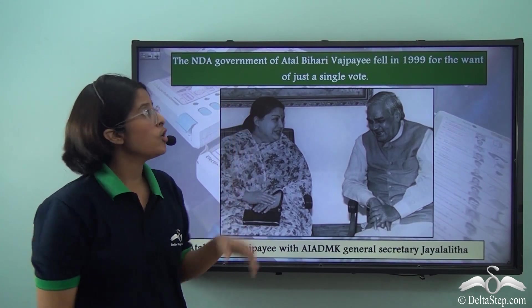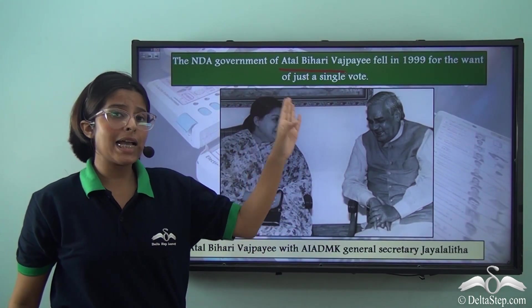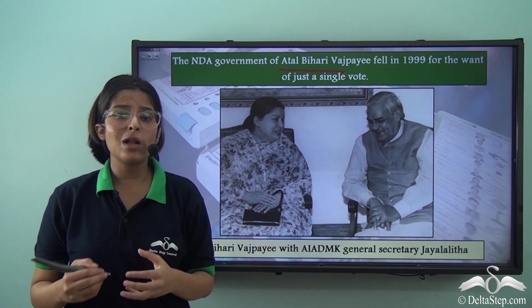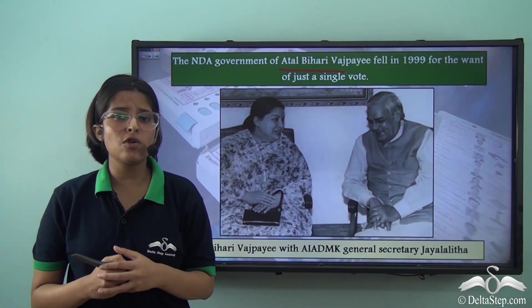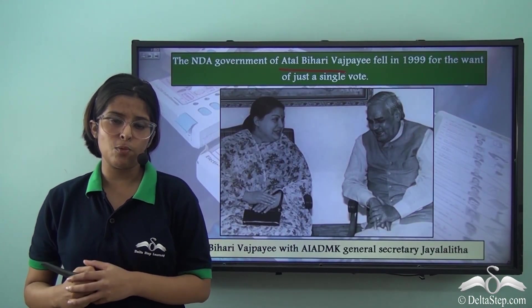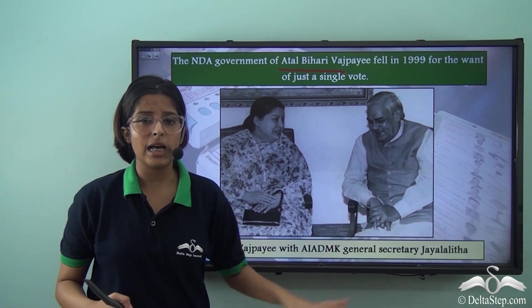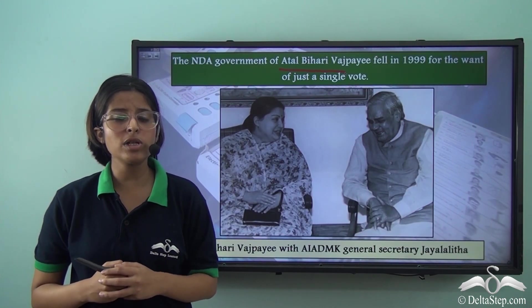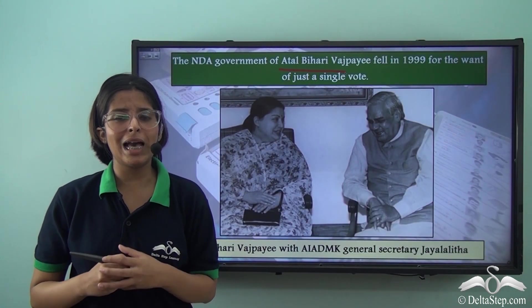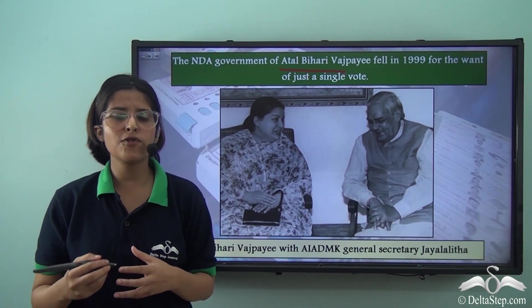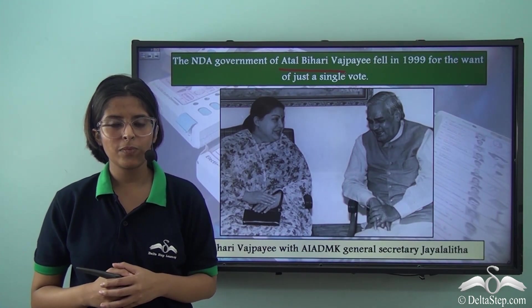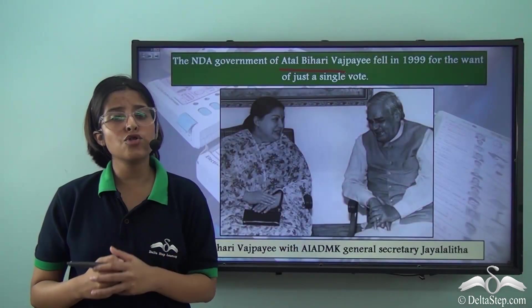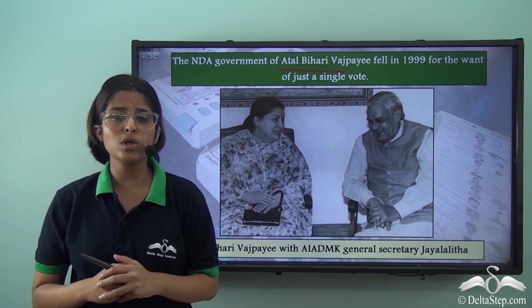For example, the NDA government of Atal Bihari Vajpayee fell in 1999 for the want of just a single vote. There was a coalition government, and one of the parties of this coalition — the AIADMK, whose General Secretary was Jayalalithaa — withdrew its support. Due to the withdrawal of this support, the Prime Minister and his government lost majority support in the Lok Sabha. His government along with all Cabinet Ministers had to resign 13 months after he took oath as Prime Minister. So the Prime Minister must keep all his party men happy and satisfied, otherwise he may lose majority in the Lok Sabha.